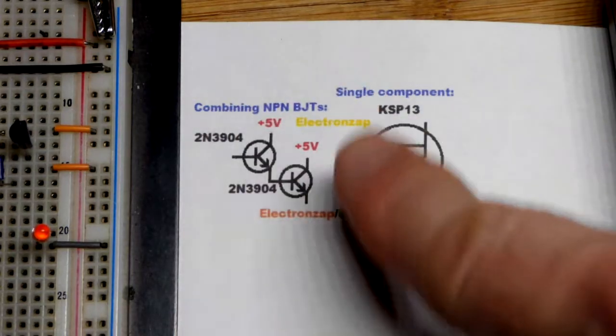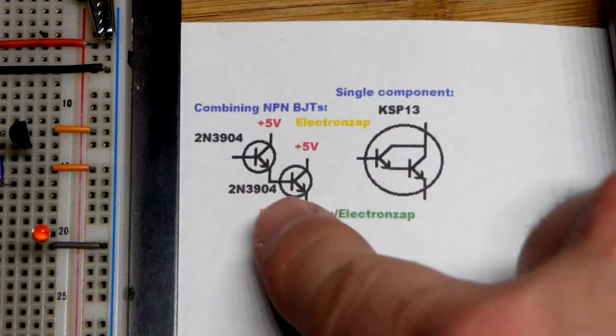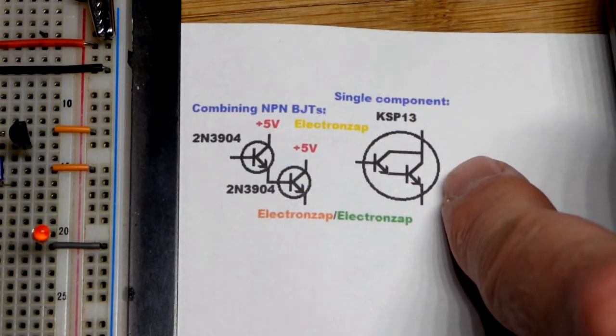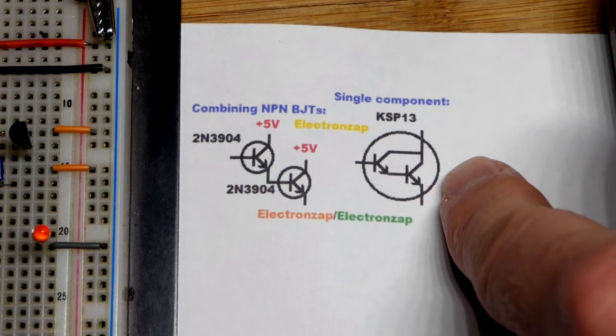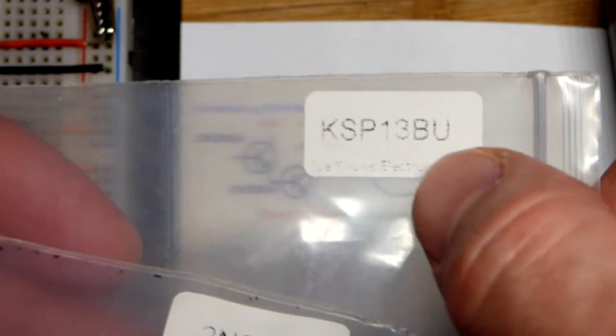So now this is how I drew up my version of the Darlington pair transistor for the circuit which I think worked better in this case. And something like this is how you'll generally see a single transistor component like the KSP13.